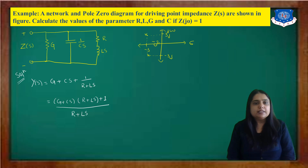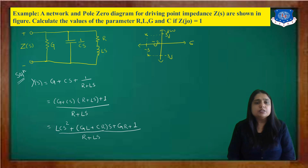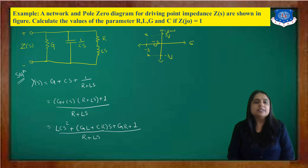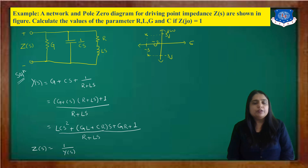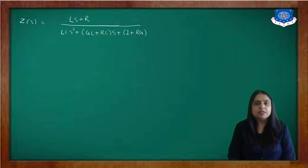Taking the LCM: Y(s) = [G(R+Ls) + Cs(R+Ls) + 1] / (R+Ls). Expanding the brackets: Y(s) = [LCs² + (GL+RC)s + (GR+1)] / (R+Ls). Since Z(s) = 1/Y(s), taking the reciprocal gives: Z(s) = (Ls+R) / [LCs² + (GL+RC)s + (1+RG)].